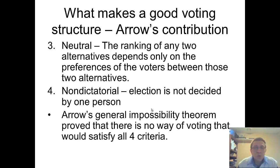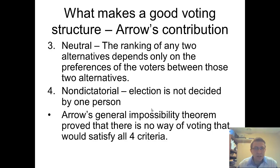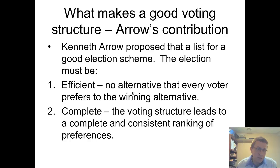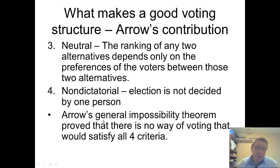Arrow's General Impossibility Theorem mathematically proved that there is no way to set up a voting scheme that satisfies all four of these criteria simultaneously. There's a fair amount of math to show this, which math majors may encounter at some point, but we don't go through it in this class. It is worth mentioning when discussing voting games, as it is one of the key contributions of a major economist in this field. You can say an election should be efficient, complete, neutral, and non-dictatorial — but you simply can't design an election scheme that satisfies all four.